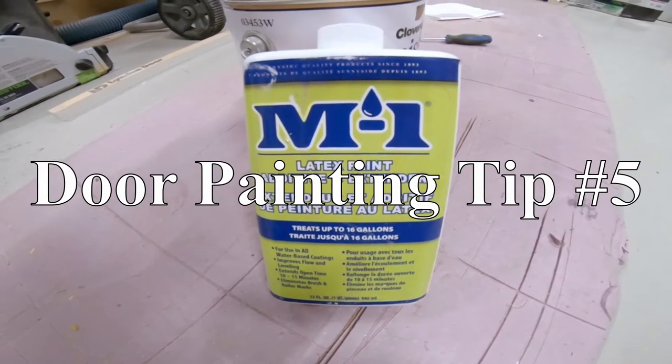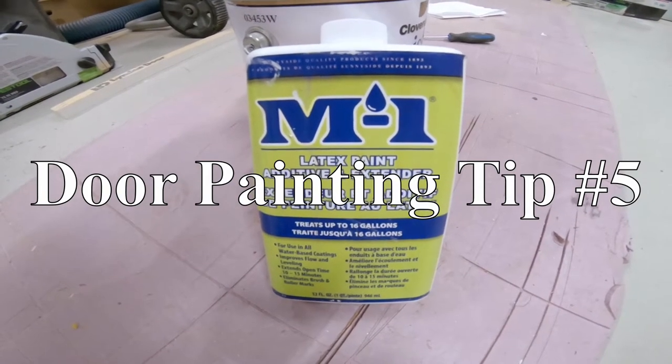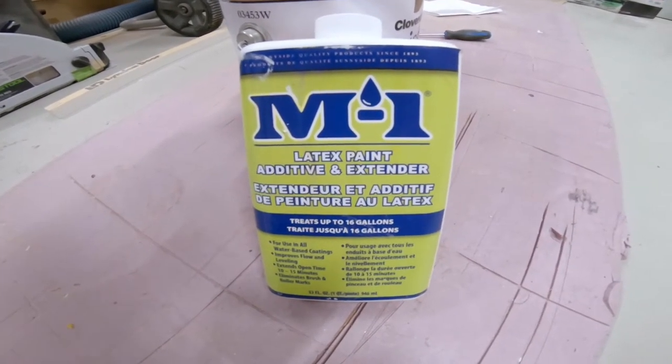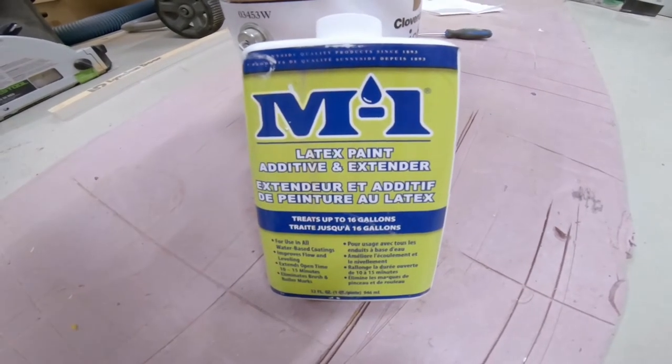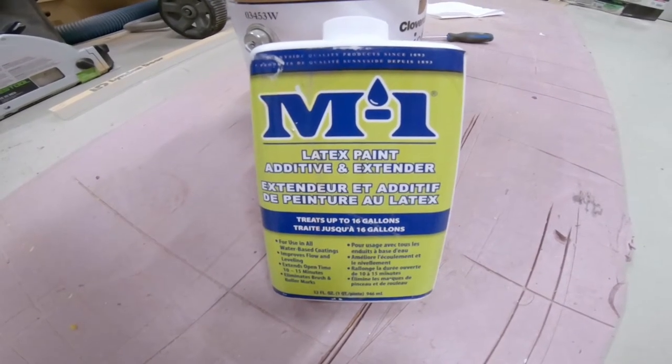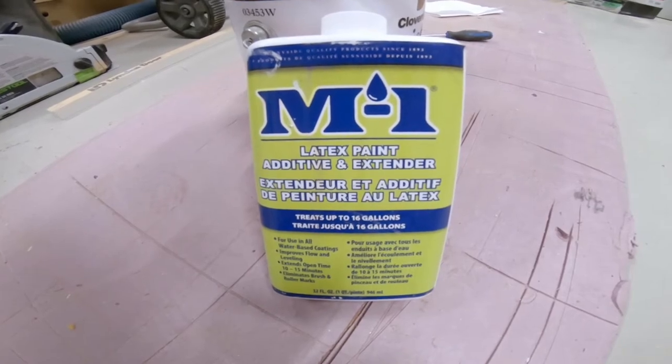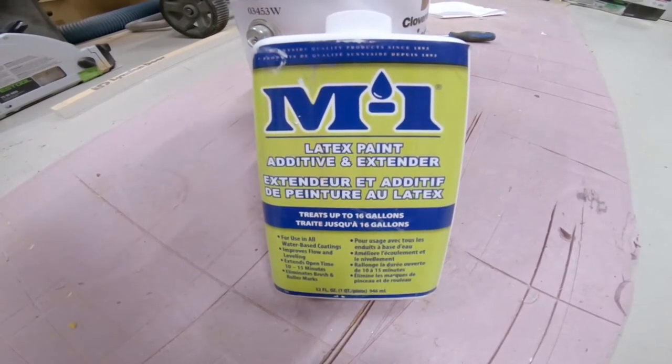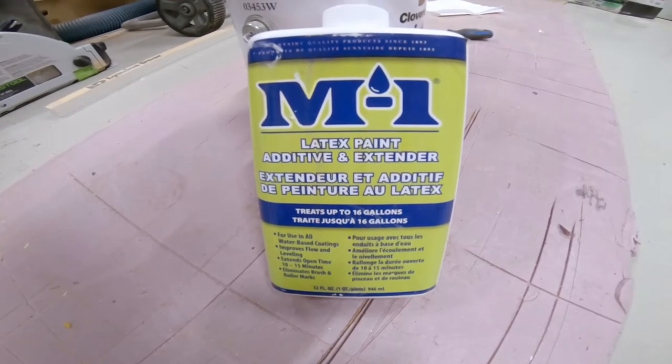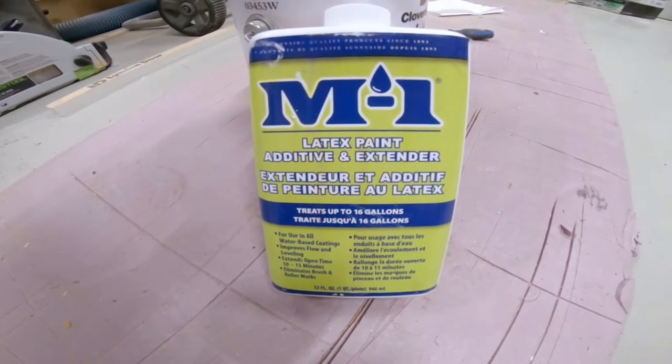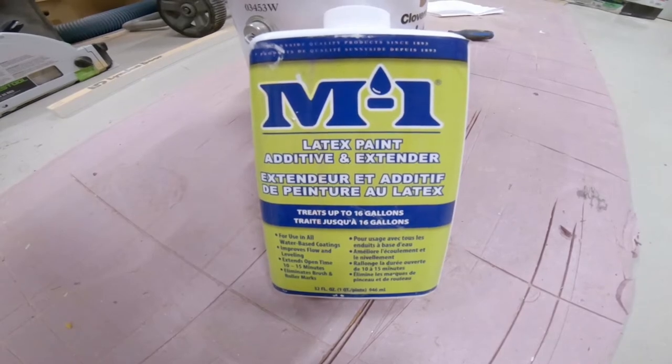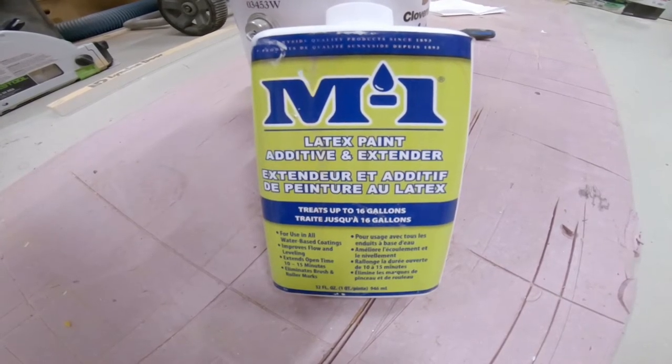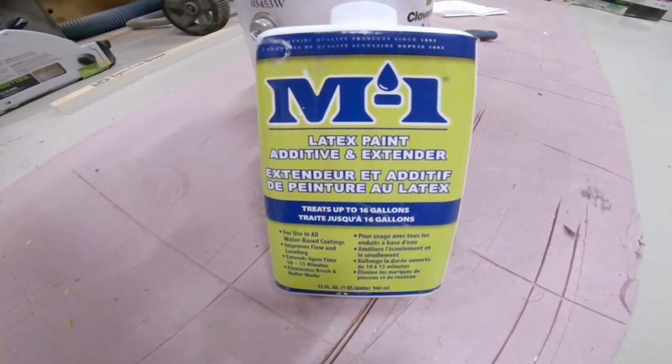My fourth tip for painting doors is to thin down your paint and use something like this for a latex paint. So this is a latex additive and extender, and what this will do is it'll thin out the paint as well as allow a longer cure time.